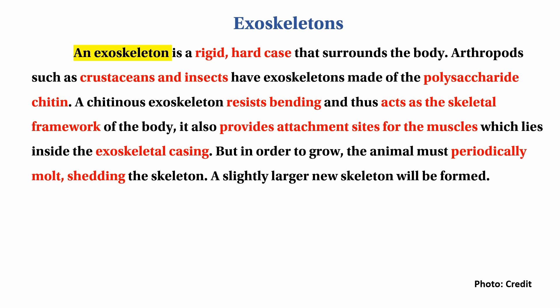Crustaceans and insects are required to have exoskeletons to support the body. A chitin exoskeleton resists bending and forms a skeletal framework of the body. It also provides an attachment site for the muscles which lie inside the exoskeleton casing.